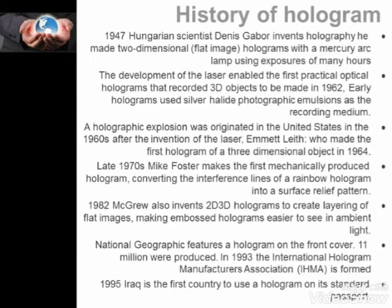Early holograms used silver halide photographic emulsions as a recording medium. A holographic explosion originated in the United States in the 1960s after the invention of the laser. Emmett Leith made the first hologram of a three-dimensional object in 1964. In the late 1970s, Mike Foster made the first mechanically produced hologram, converting the interference lines of a rainbow hologram into a surface relief pattern.